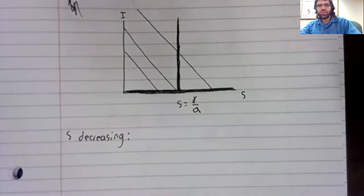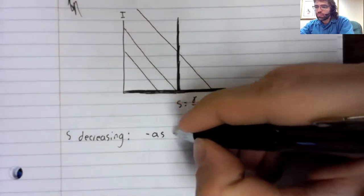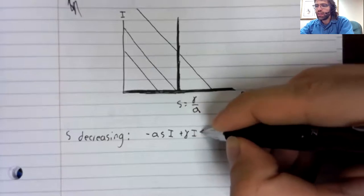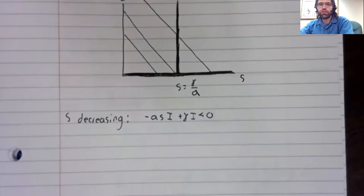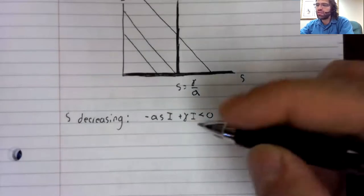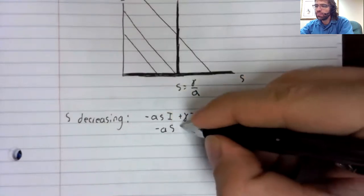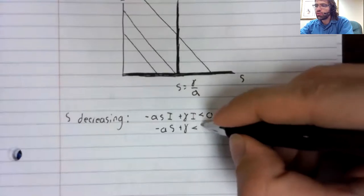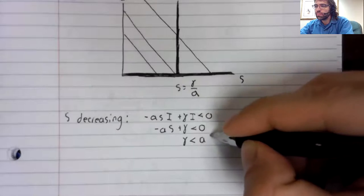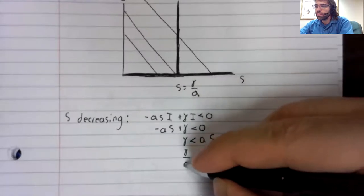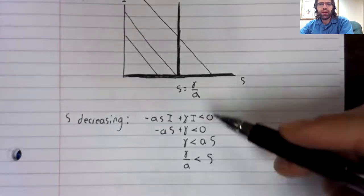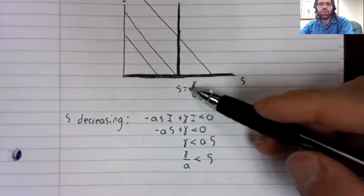If S is increasing as time passes, this is positive. If S is decreasing as time passes, this is negative. So S is decreasing when negative AS I plus gamma I is less than zero. I is always positive if we divide both sides of this inequality by I, it does not change the direction of the inequality.